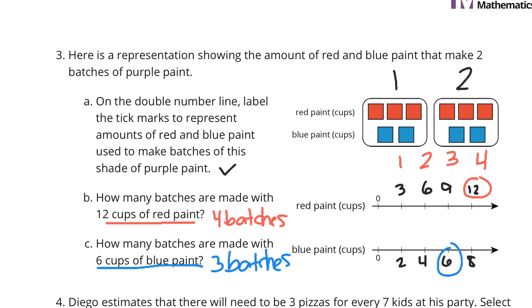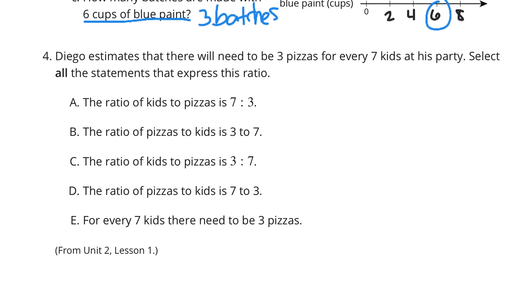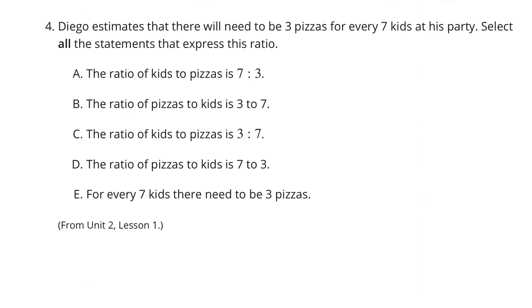As we continue on to question 4. Diego estimates that there will need to be 3 pizzas for every 7 kids at his party. Select all the statements that express this ratio. The ratio of kids to pizzas is 7 to 3 — kids is 7, pizzas are 3 — that is a true statement. The ratio of pizza to kids, if we reverse it, is 3 to 7 — that's also true. The ratio of kids to pizzas is 3 to 7 — no, that's the ratio of pizza to kids, so C is not true. In D, the ratio of pizzas to kids is 7 to 3 — pizza to kids 7 to 3, no that's 3 to 7, so that's not true. For every 7 kids, there needs to be 3 pizzas — and that is true.